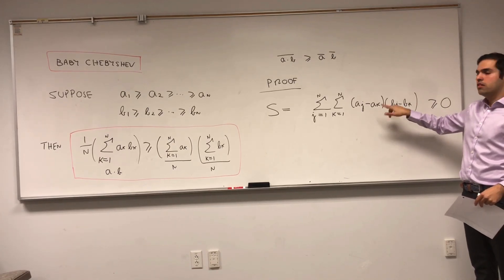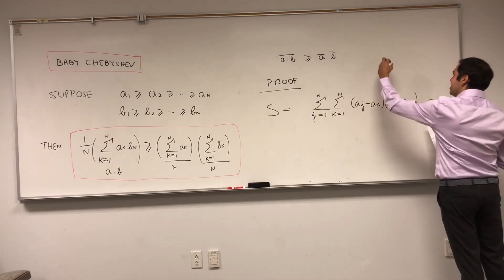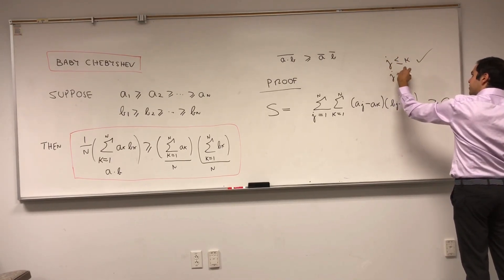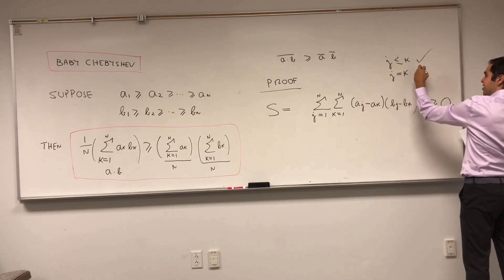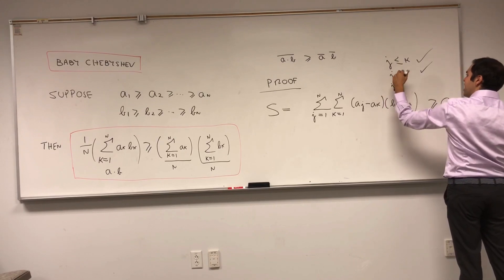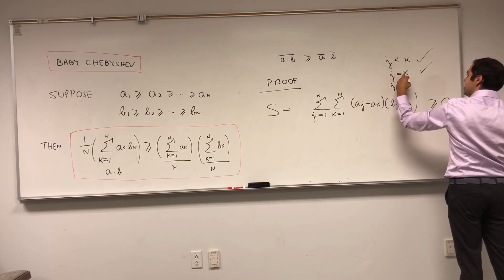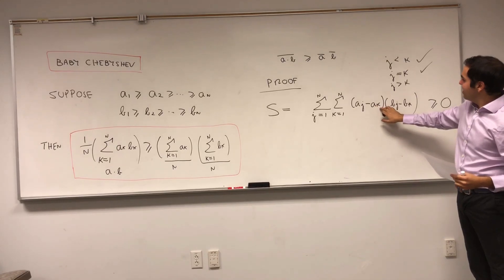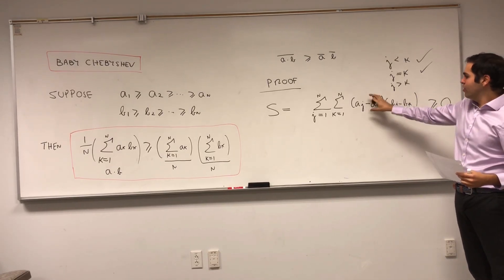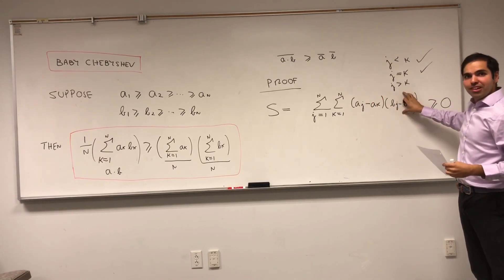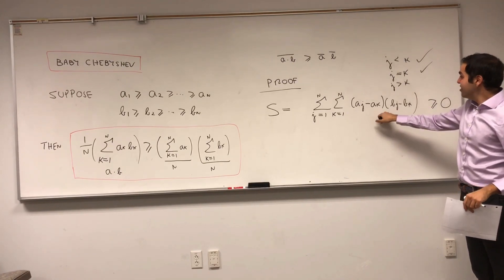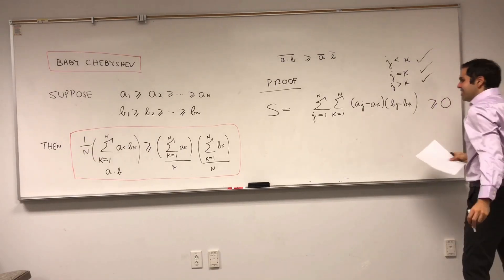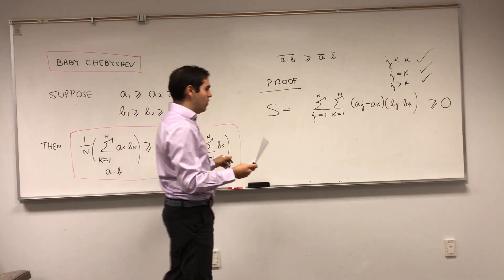So the product of two negative numbers is positive — we're good in that case. If j equals k, then both factors are zero, so we're still good. And if j is strictly greater than k, then (aⱼ − aₖ) is negative — since things like a₃ minus a₂ would be negative for a decreasing sequence — and (bⱼ − bₖ) is also negative. So their product is positive. In all cases, this double sum S is non-negative.